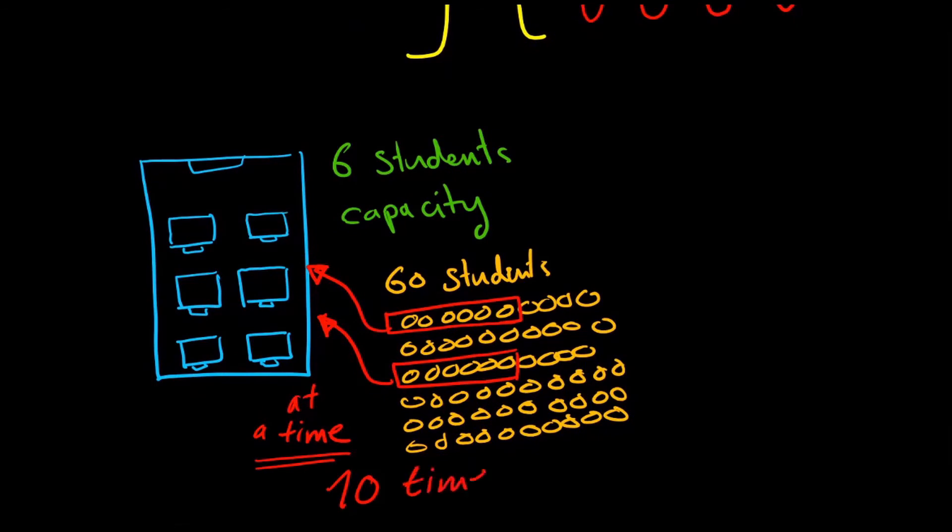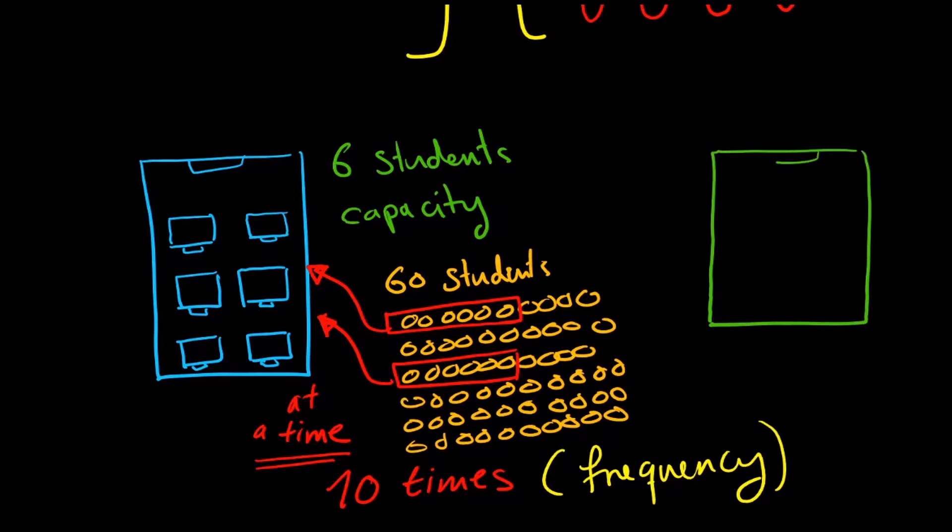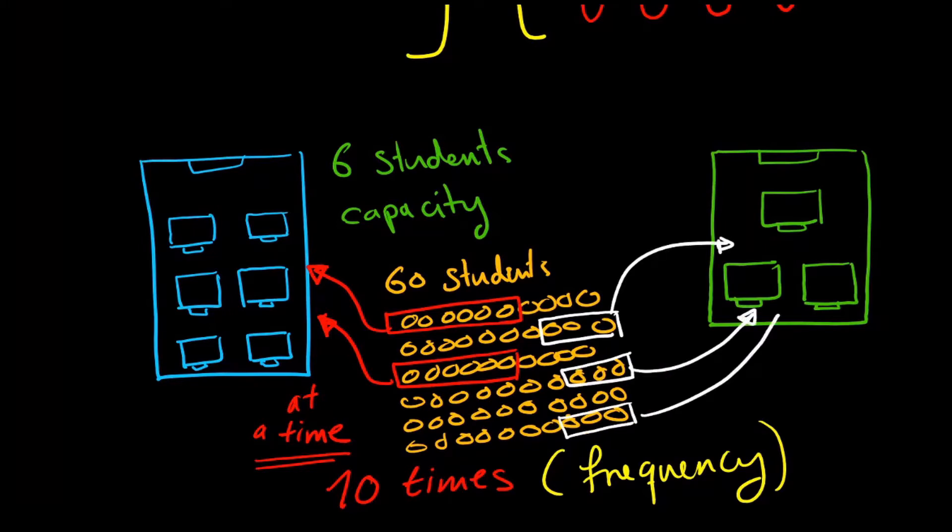We can say that the number 10 is the frequency for the student to use this classroom. How if we reduce the capacity or the size of the classroom to the half? So the number of students who can use this classroom is 3 at a time instead of 6. By default, the frequency will increase to 20 to cover all 60 students.